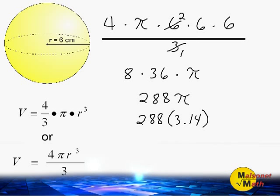After multiplying 288 times 3.14, we come up with an answer of 904.32 cubic centimeters. And that is how you find the volume of any sphere in terms of pi, or using 3.14 for the value of pi.